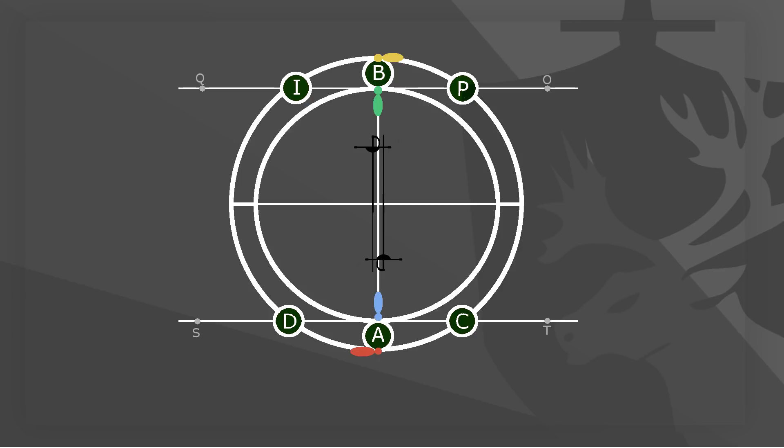Q corresponds to S, I to D, P to C and finally O to T. Draw a line from D to I and a line from C to P. Both parallel to the vertical diameter.